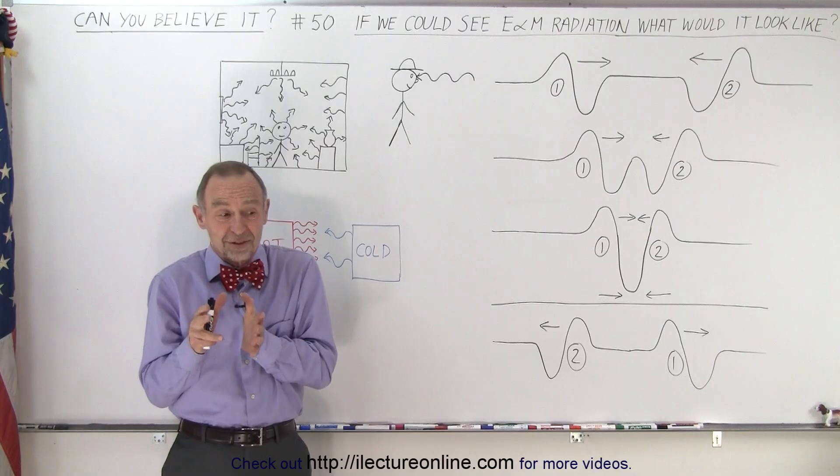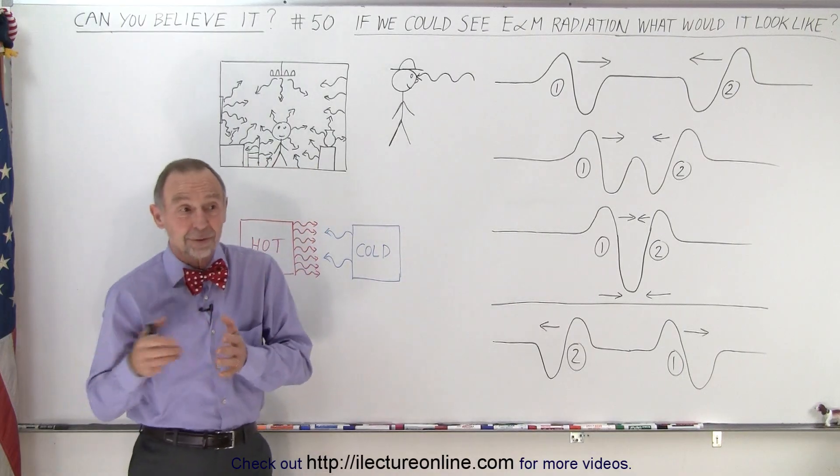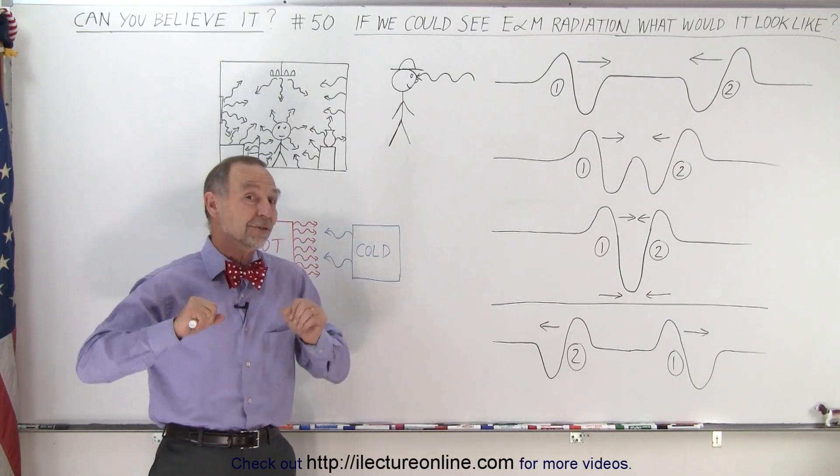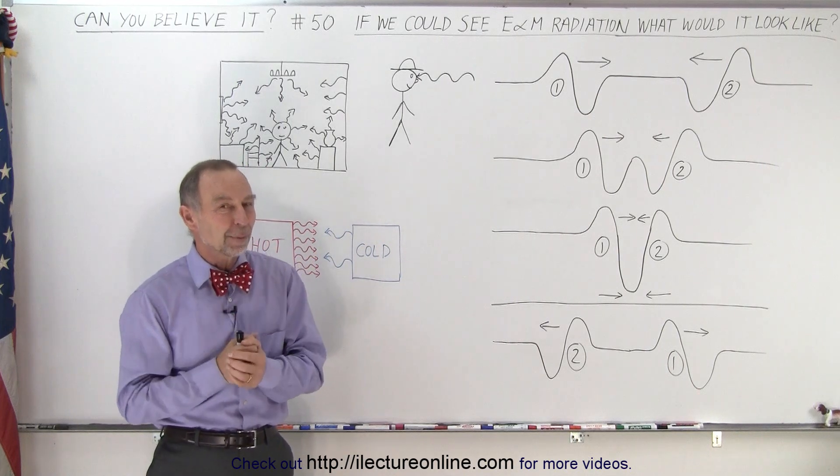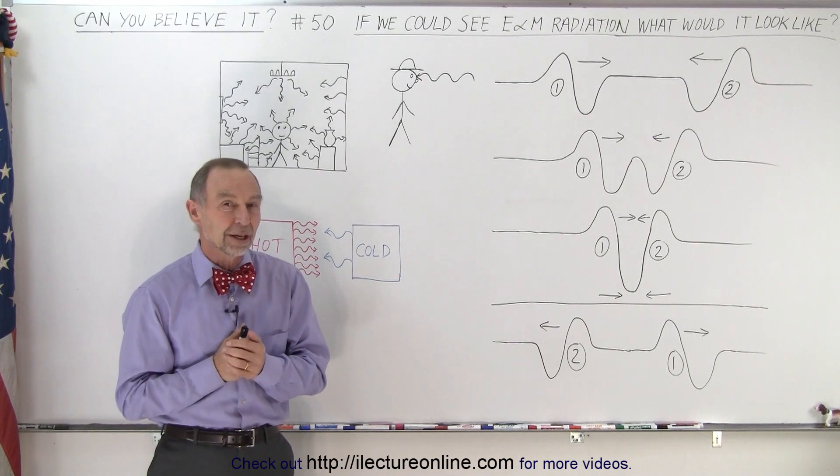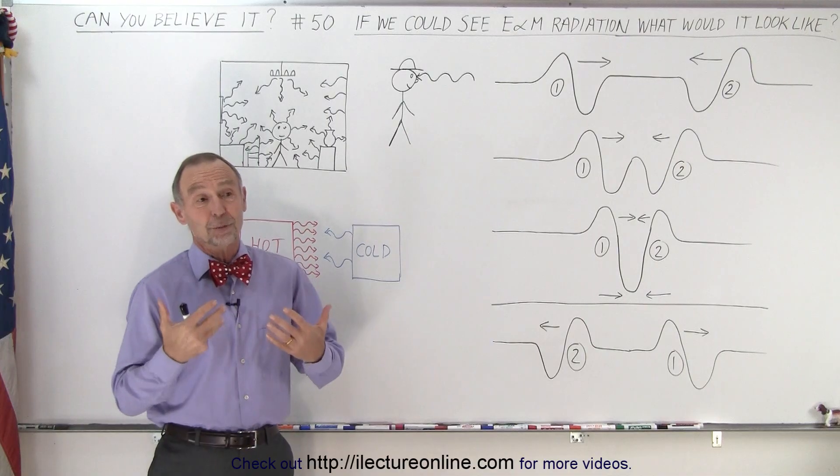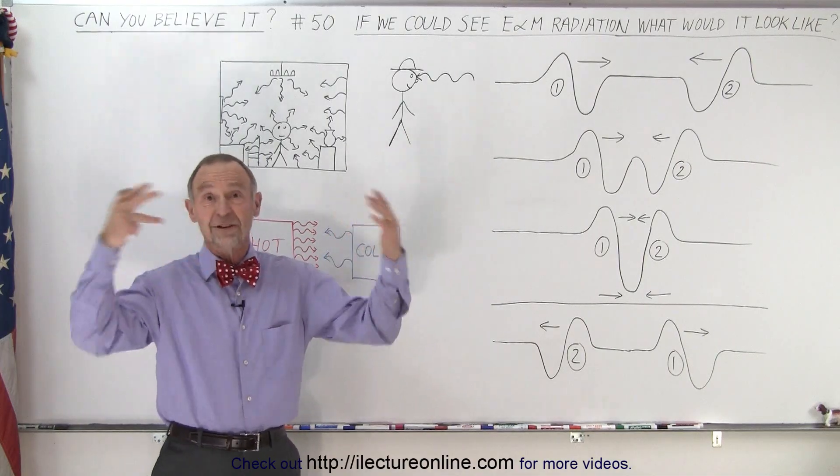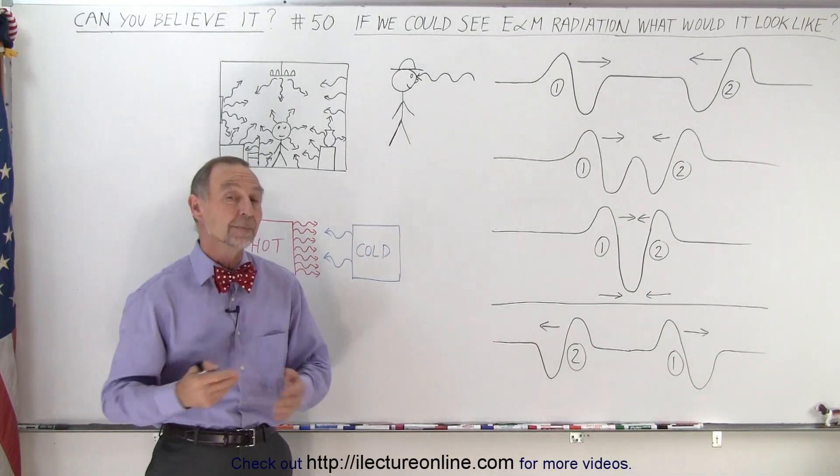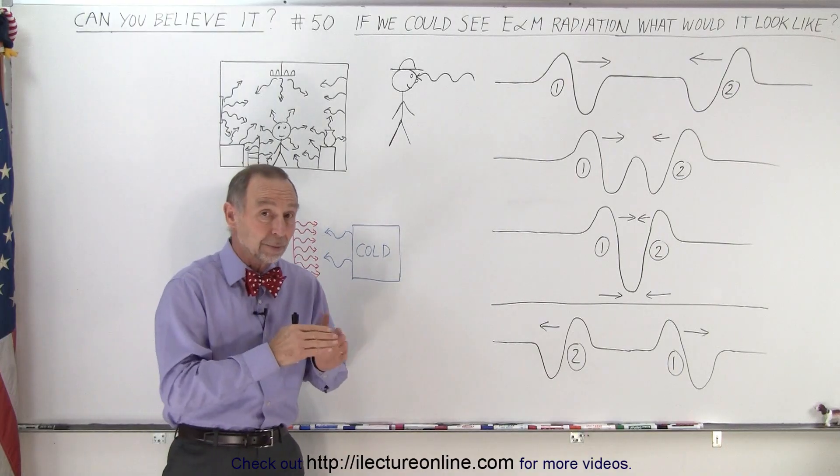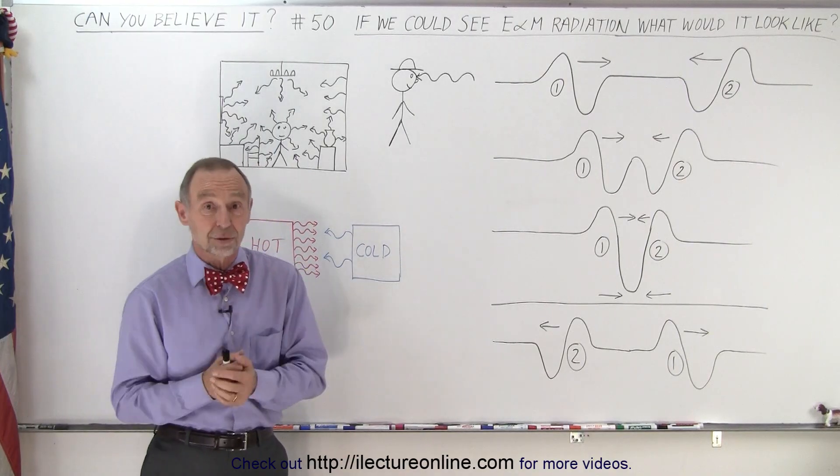And perhaps if we could see infrared or ultraviolet radiation, we would see different kinds of colors, so to speak. Not that we really would know, but it would be interesting what we would see. Because normally now when we go out at night and there's no visible light, we can barely see anything at all. But if we could also see infrared, like what some animals and some insects can do.